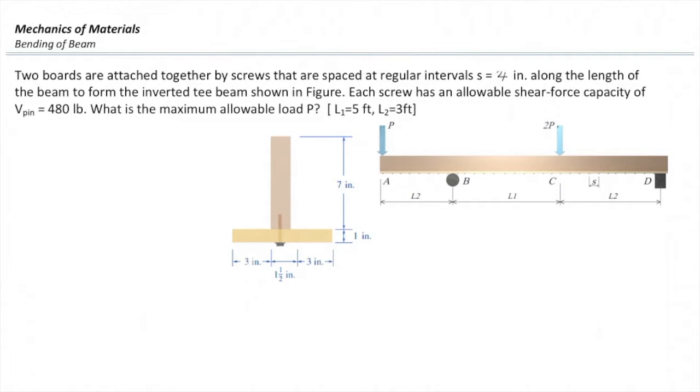Two boards are attached together by screws that are spaced at regular intervals of 4 inches along the length of the beam to form the inverted T-beam shown in the figure. Each screw has an allowable shear force capacity of 480 pounds. What is the maximum allowable load P that can be applied to this beam?